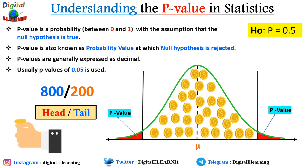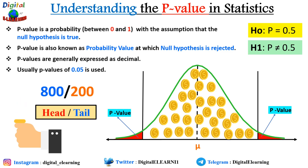My null hypothesis for this coin would be that the coin is fair and should have equal probability — a known fact that it will have 50 percent heads and 50 percent tails. My alternate hypothesis would be that it is not 0.5. The chance of occurrence of null and alternate are mutually exclusive, meaning either of them can occur but both cannot occur at the same time.